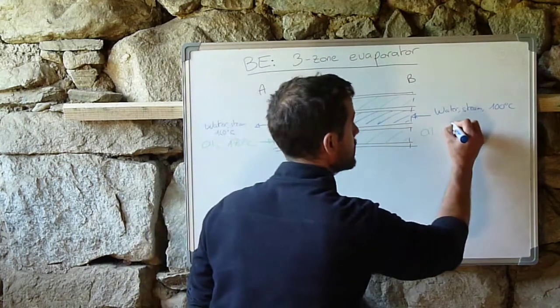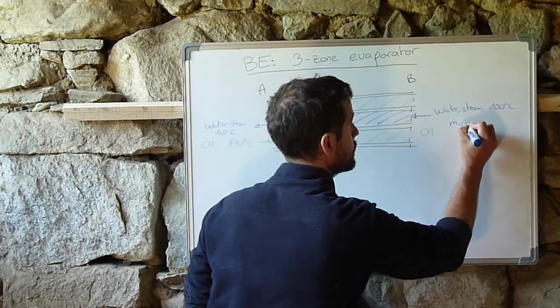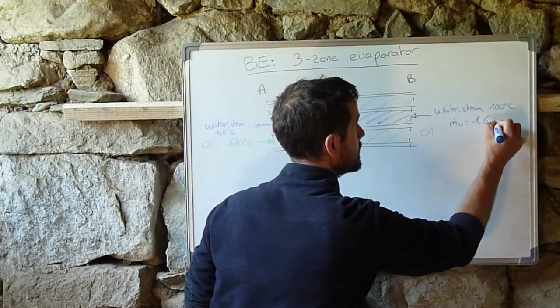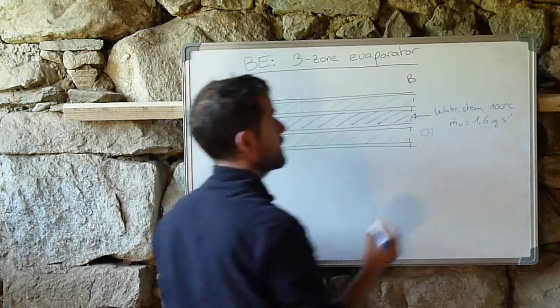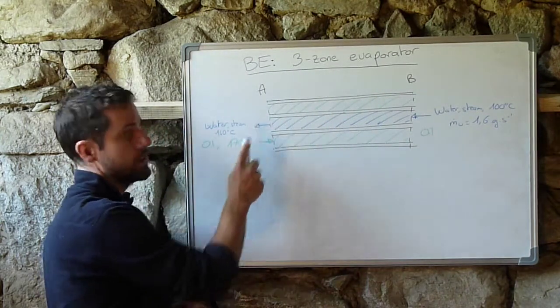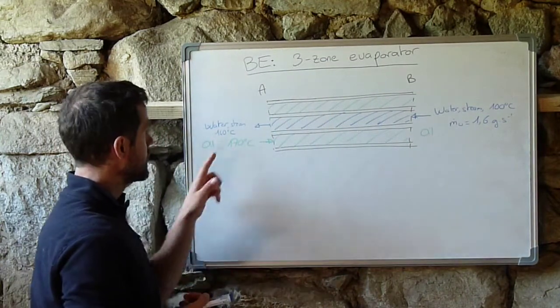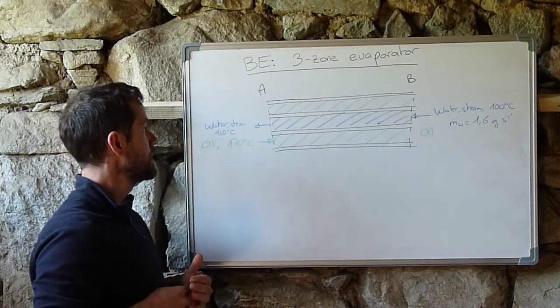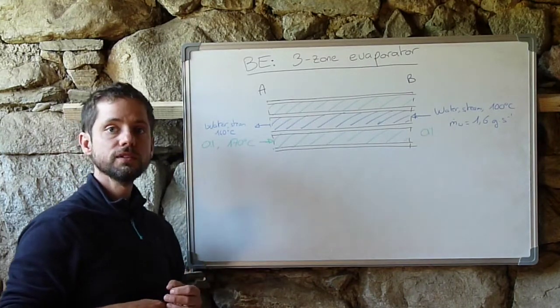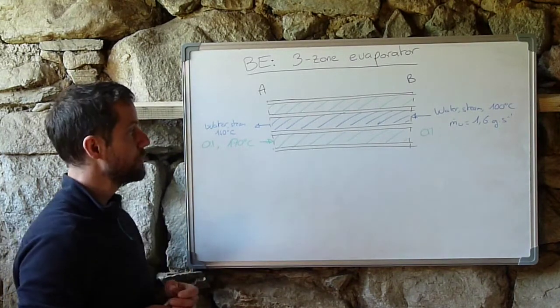And I just recall that the mass flow rate of water is 1.6 grams per second, and we know that at point A, at the outlet, we need to have water steam at 140 degrees Celsius.